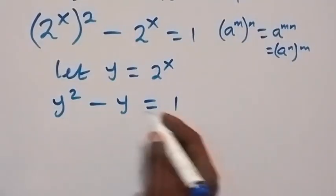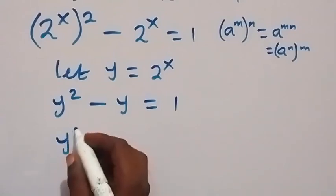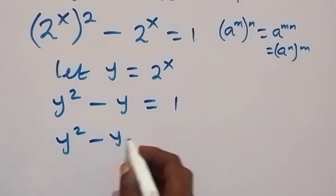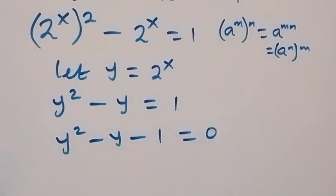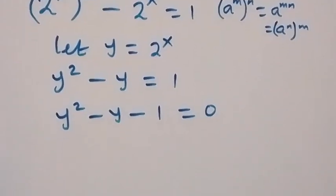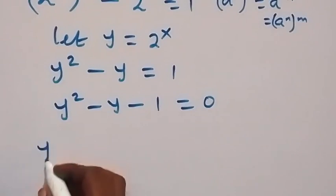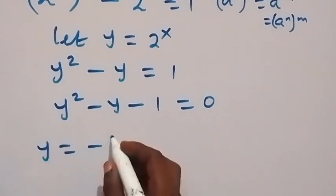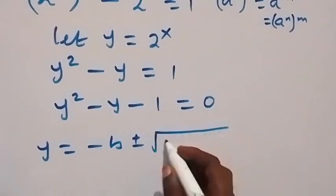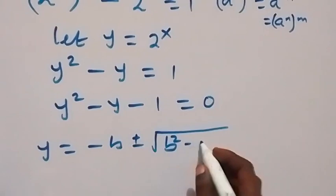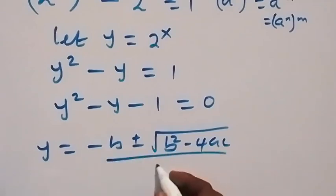Let's take 1 to this side, and this becomes y squared minus y minus 1 equals to 0. From here, we solve this quadratic equation using the quadratic formula. We have y equals to minus b plus or minus square root of b squared minus 4ac, over 2a.